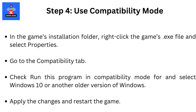Step 4: Use Compatibility Mode. In the game's installation folder, right-click the game's .exe file and select Properties. Go to the Compatibility tab, check 'Run this program in Compatibility Mode for,' and select Windows 10 or another older version of Windows. Apply the changes and restart the game.